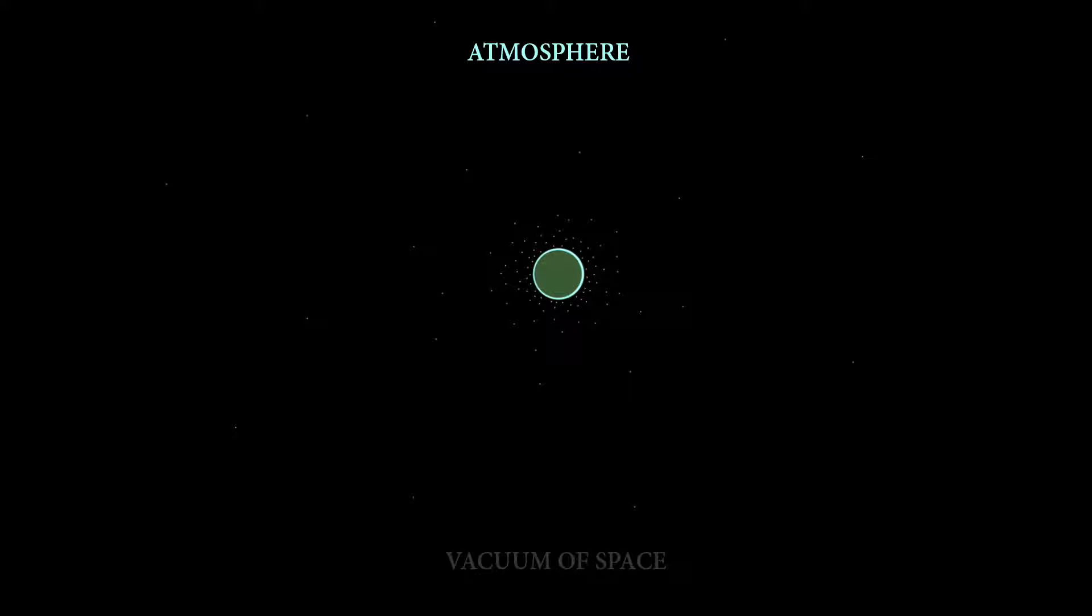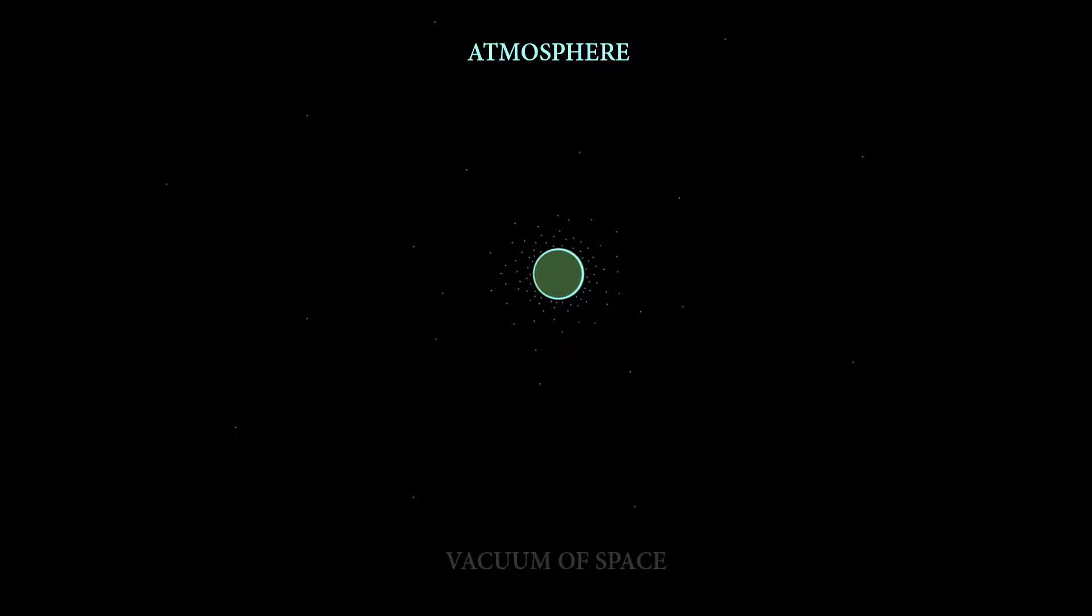How does the atmosphere not get pulled off? And of course, we already know this is coming. The answer we get is gravity. Ooh! Gravity. Wow. Earth's atmosphere is an extremely thin skin surrounding our planet. What force keeps it from flying off into space? The answer is always gravity. Anything that's unexplainable, gravity.